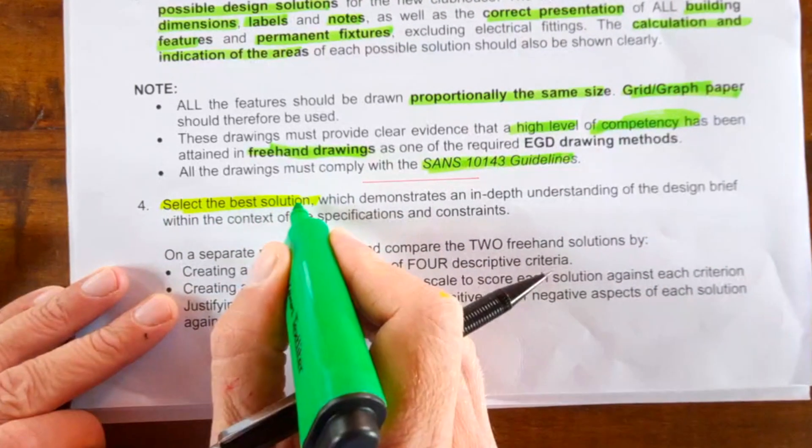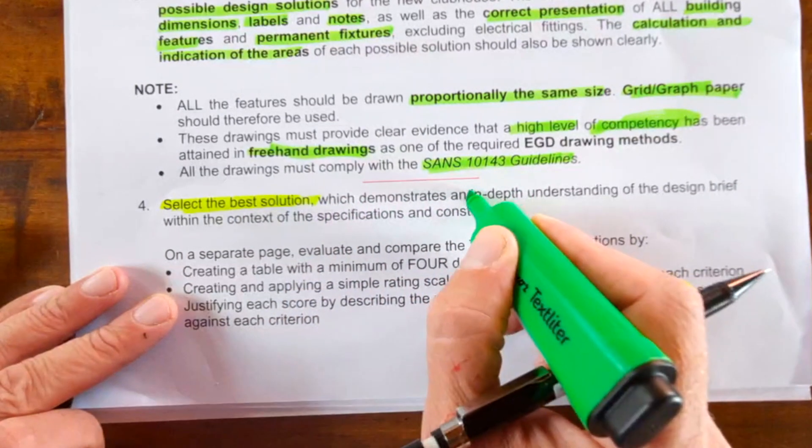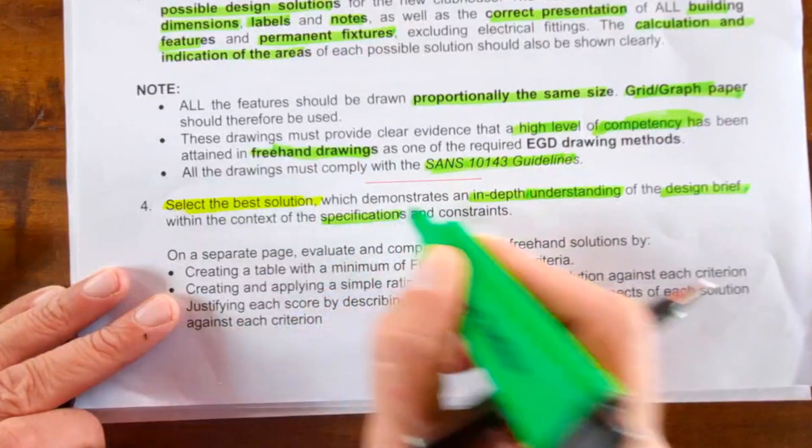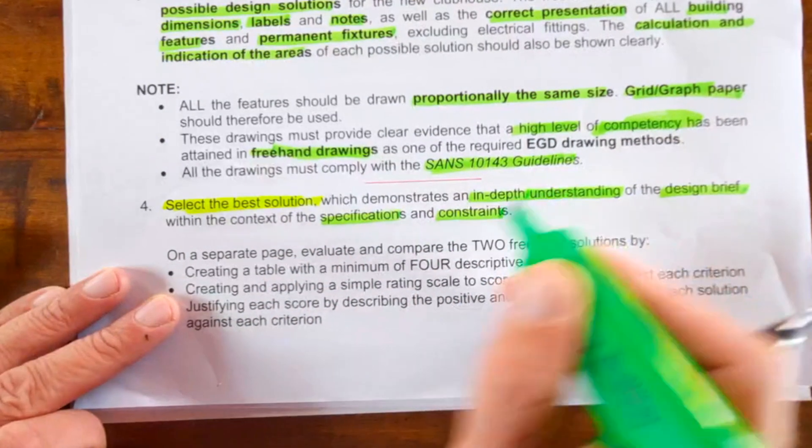So selecting the best solution which demonstrates that you have an in-depth understanding of the design brief within the context of the specifications and constraints. How do we do that?